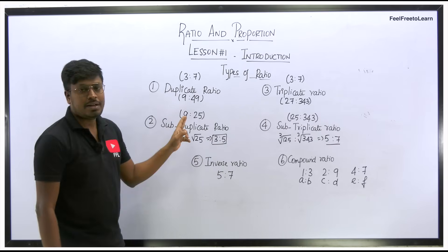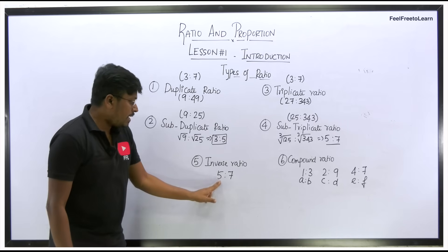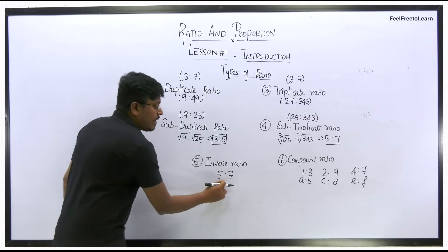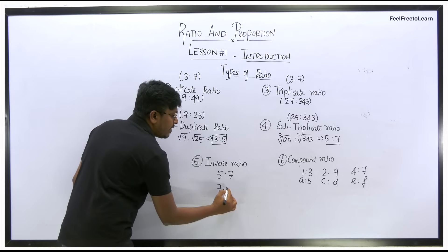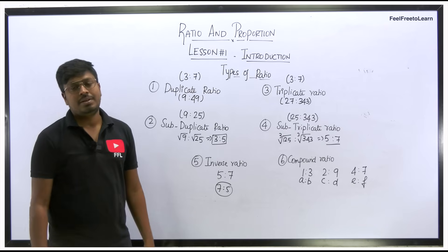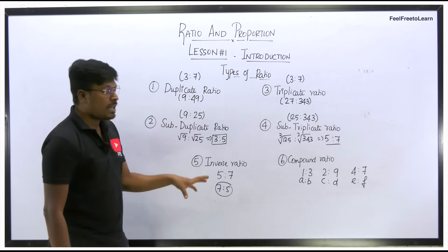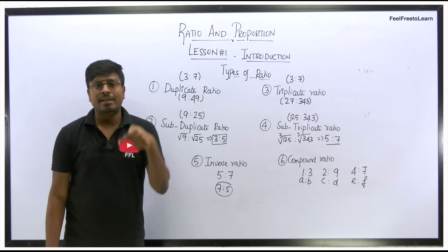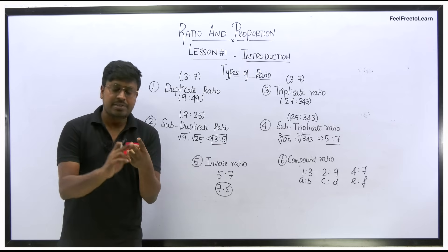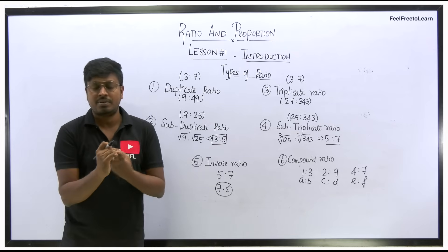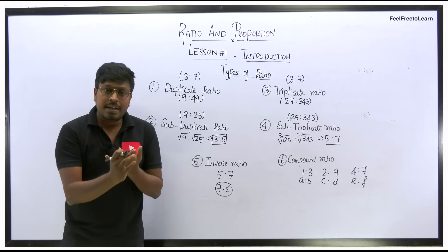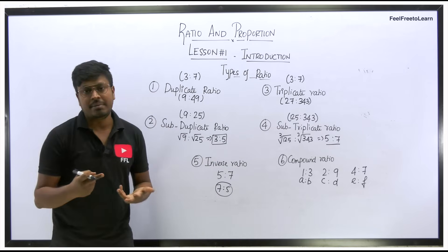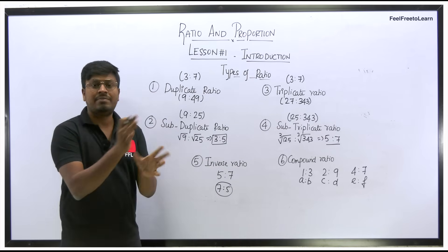These are four important types. Always remember them. Inverse ratio is very simple: just invert the given ratio. For example, if the ratio is 5:7, then the inverse ratio is 7:5. So these are the five important types of ratios: duplicate (square), triplicate (cube), sub-duplicate (square root), sub-triplicate (cube root), and inverse (invert the value).